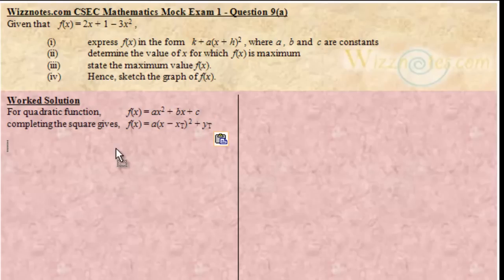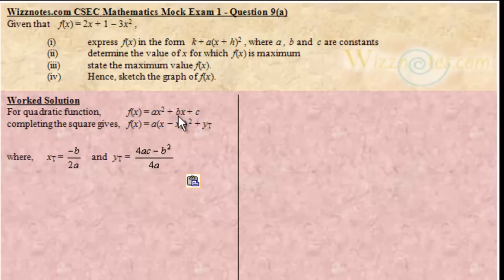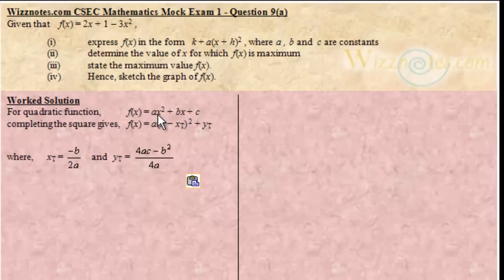The xt and yt values are going to be: xt is equal to negative b divided by 2a, where b is the coefficient of x and a is the coefficient of x squared. And yt is going to be 4ac minus b squared divided by 4a. Again, a, b and c are the coefficient of x squared, b, and the constant term c respectively.